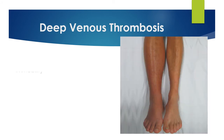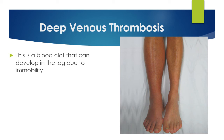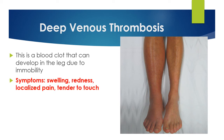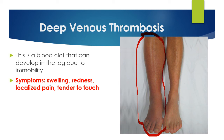Deep venous thrombosis, also known as DVT, is a blood clot that can develop in the leg due to immobility and blood pooling. This is an emergency. Symptoms include swelling, redness, localized pain, and tenderness to touch. As seen in the picture of the right leg, it is visibly different from the left — very red and swollen — and patients will have significant pain with ankle movement and walking.